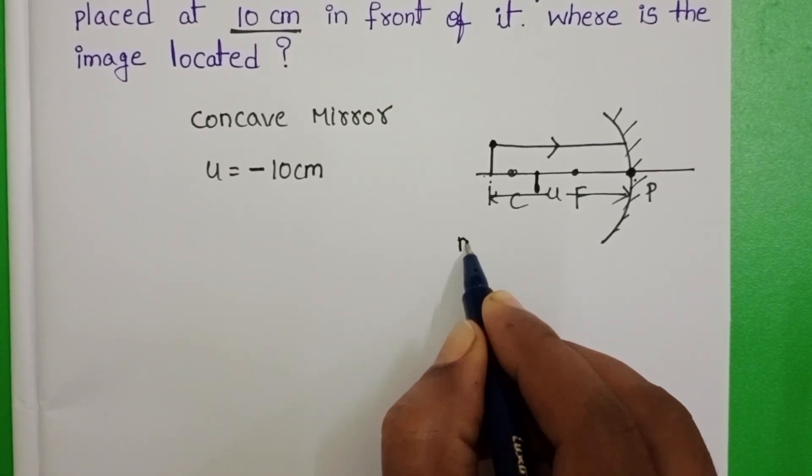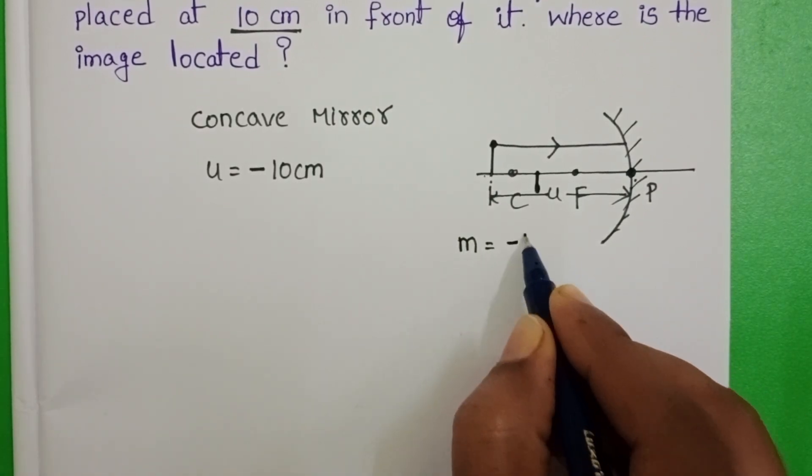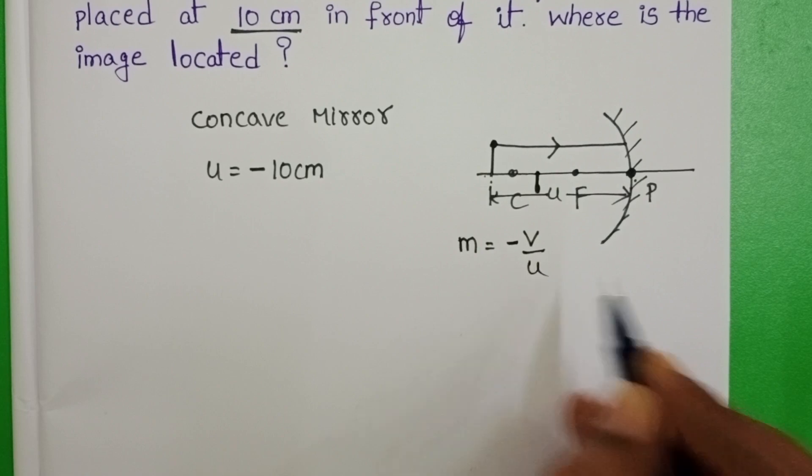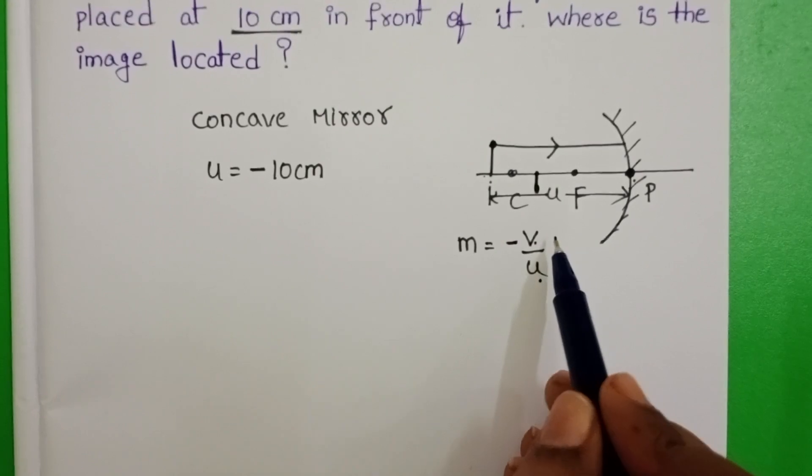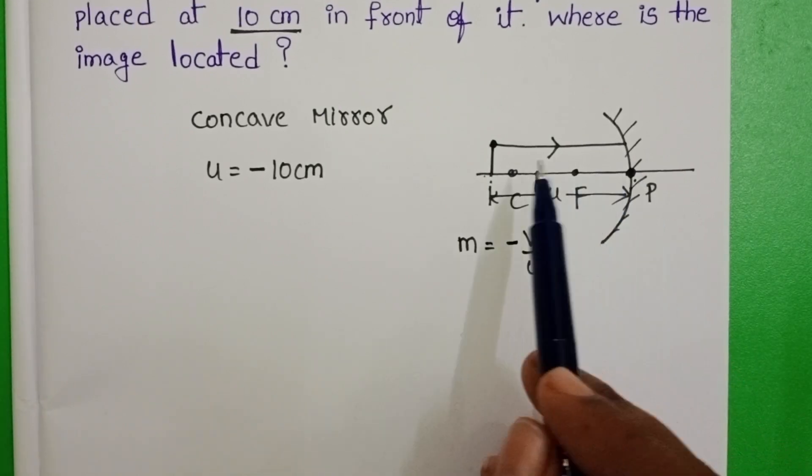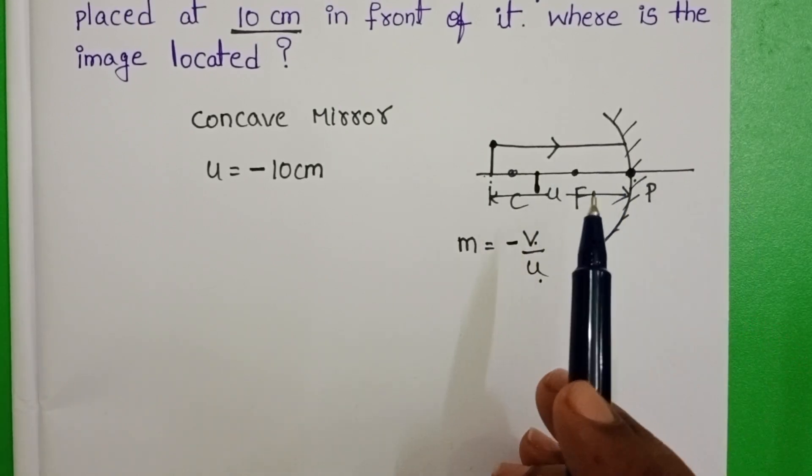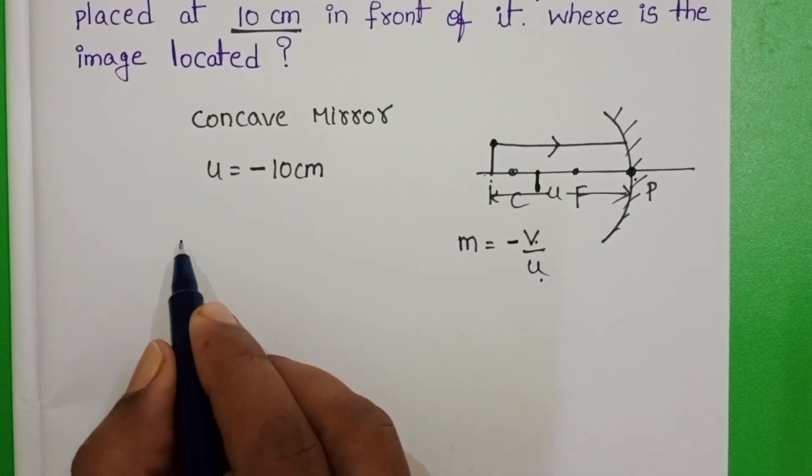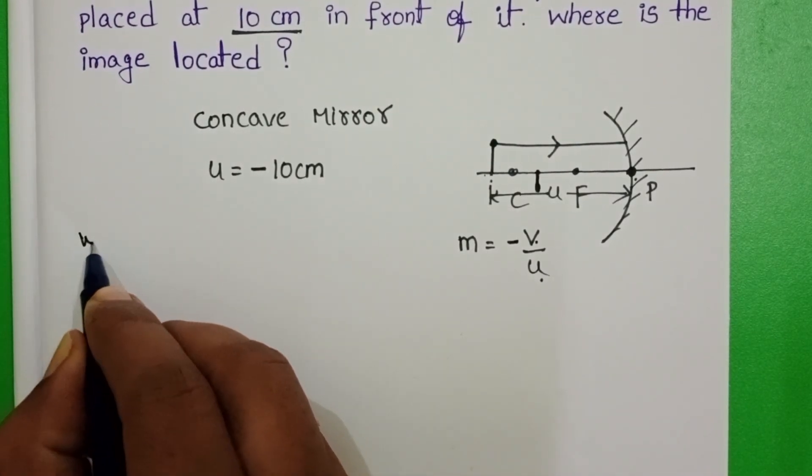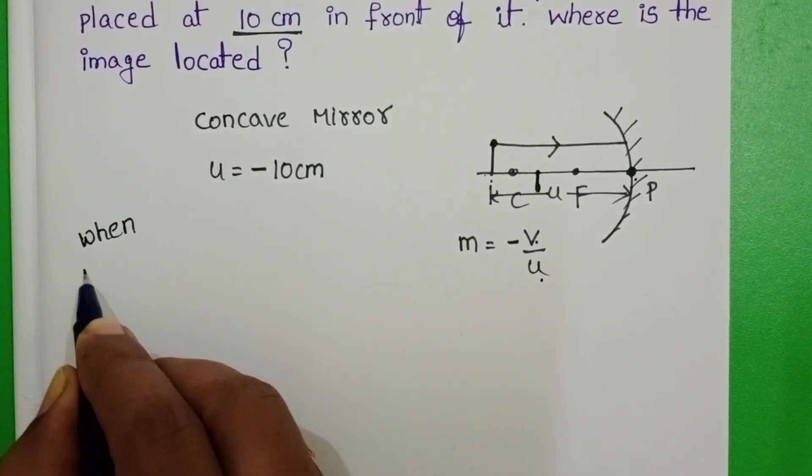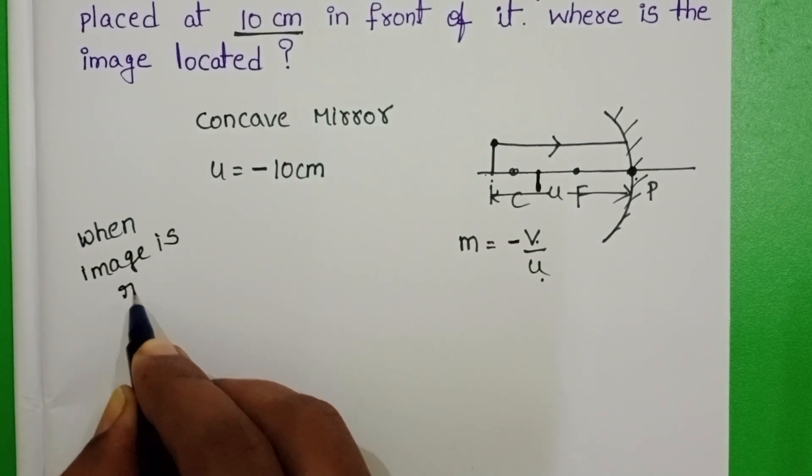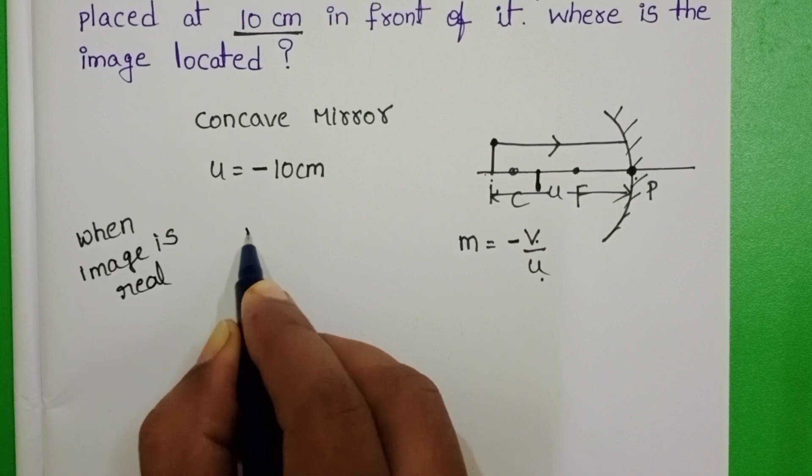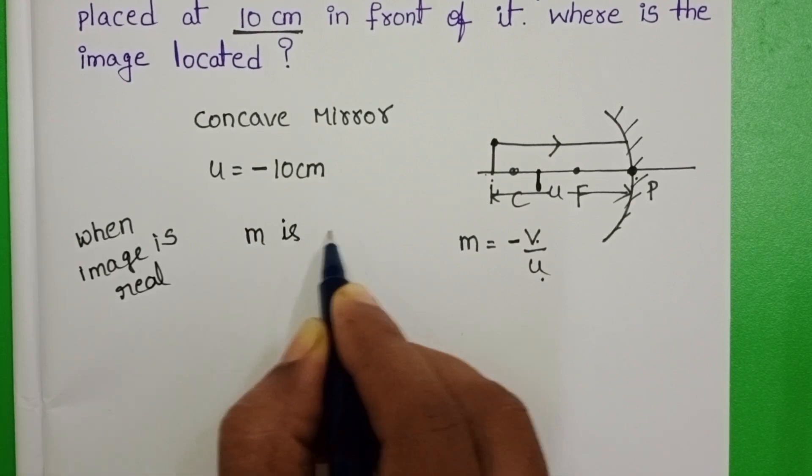Magnification formula, M is equals to minus V by U. V is negative, U is negative. Then, overall magnification is negative for the real image. So, remember this. When image is real, magnification is negative.